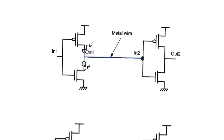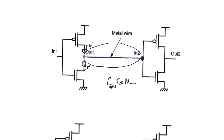In the lumped C model, this entire section of wire is represented as a single capacitance. The value of that capacitance, called C_wire, can be calculated as epsilon_oxide multiplied by the width — defined by DRC — multiplied by the length traveled between the two gates, and divided by the height T of the metal wire above the substrate, which is dictated by technology and specifically by which metal layer you're using.